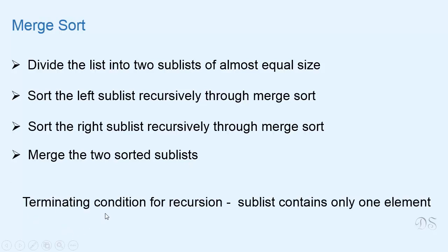The terminating condition for recursion is that the sublist should contain only one element, because we can consider a one-element sublist as a sorted list. Now let's take an example and see how this algorithm works.